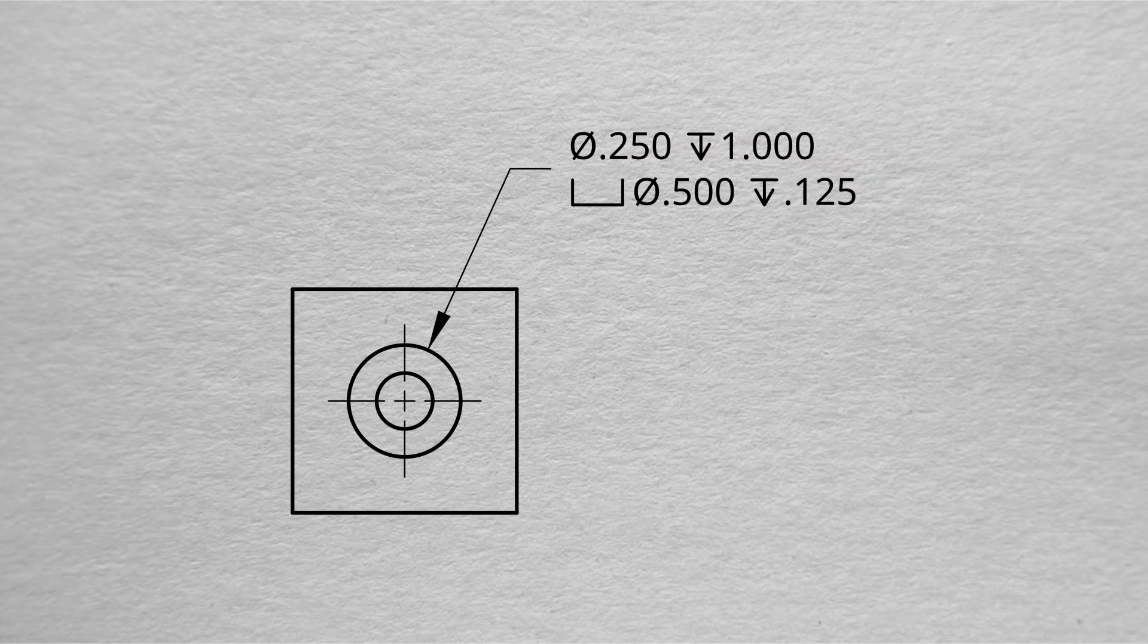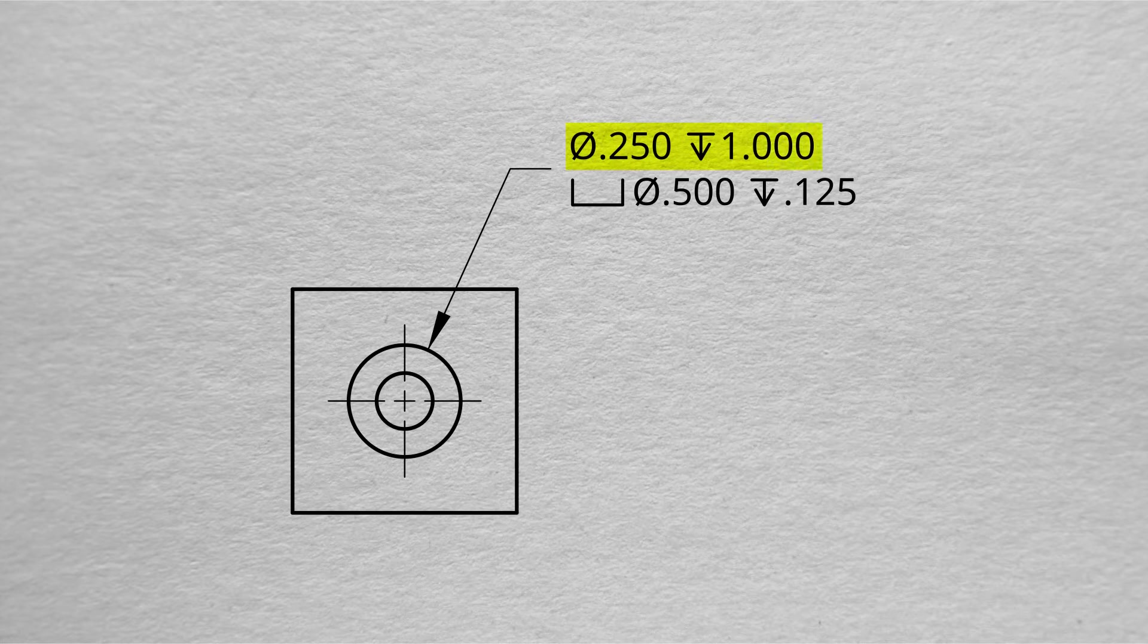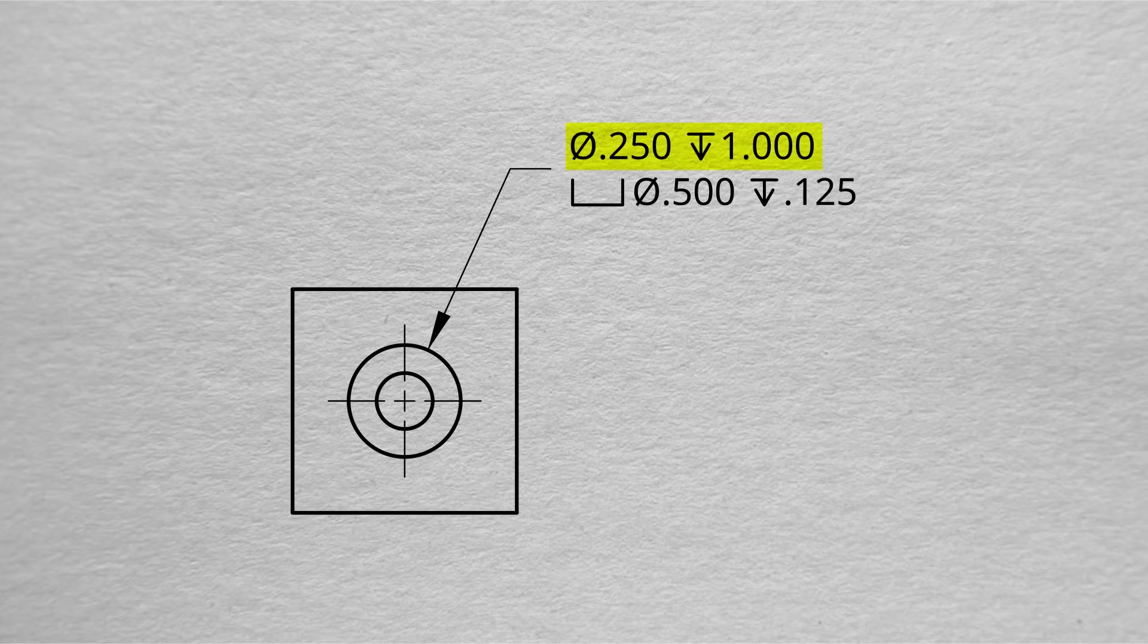Our next type of hole note is for a counterbore. It's given on two separate lines, so let's break it down. The top line is going to be information about the hole itself. We have a diameter of a quarter of an inch, or 0.25, and it goes down one inch. It has a drill depth of one inch.